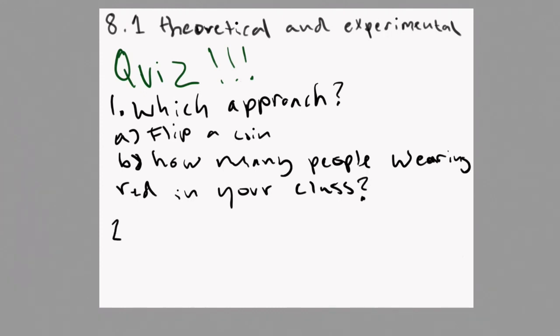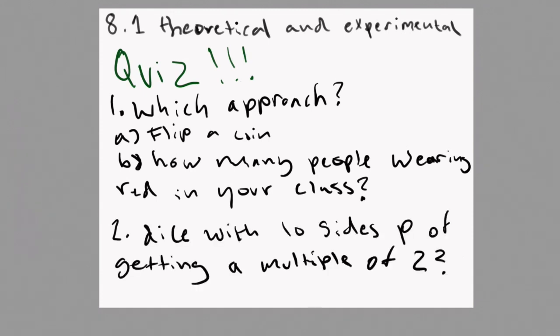The second question is what is the probability of rolling a multiple of two with a 10-sided dice? Question three is what is the probability of a broken phone screen when you have three broken phone screens and there are 10 without broken screens?